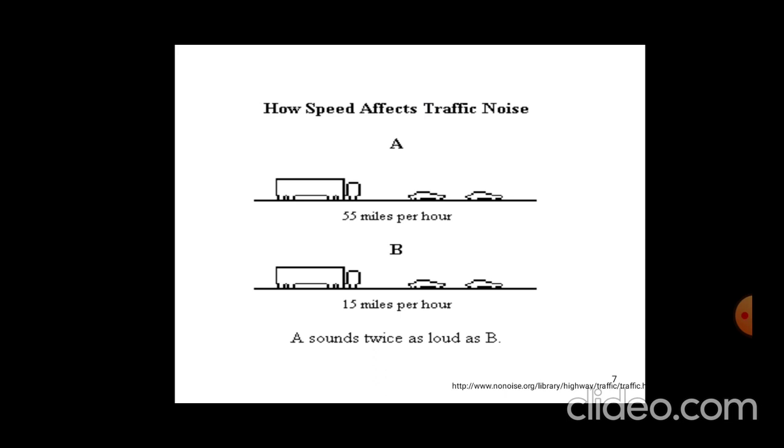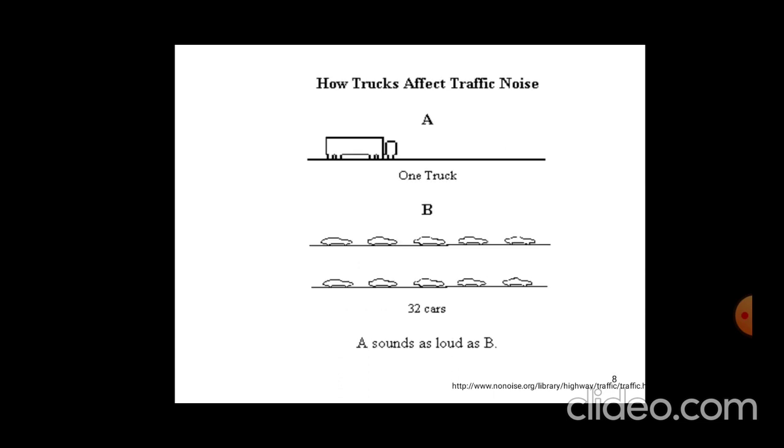How speed affects traffic noise: 55 miles per hour versus 50 miles per hour—a sound twice as loud as B means A is twice as loud. So compared to B, A is twice the noise.